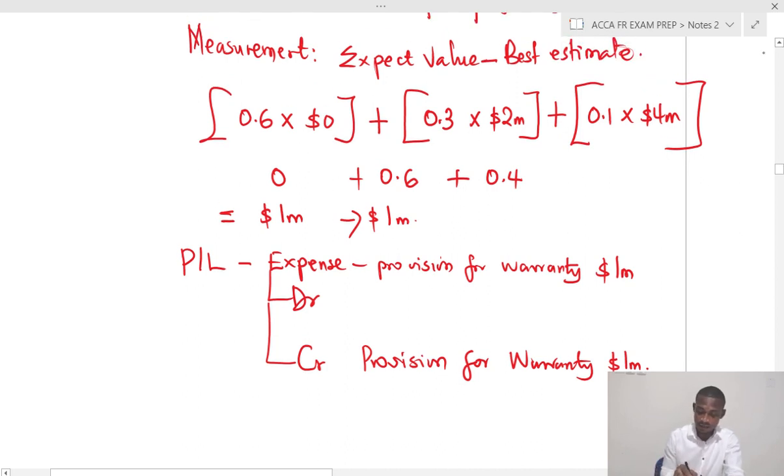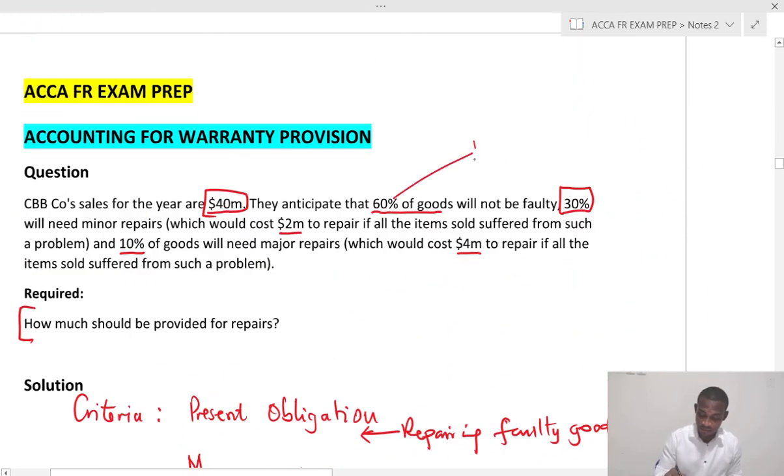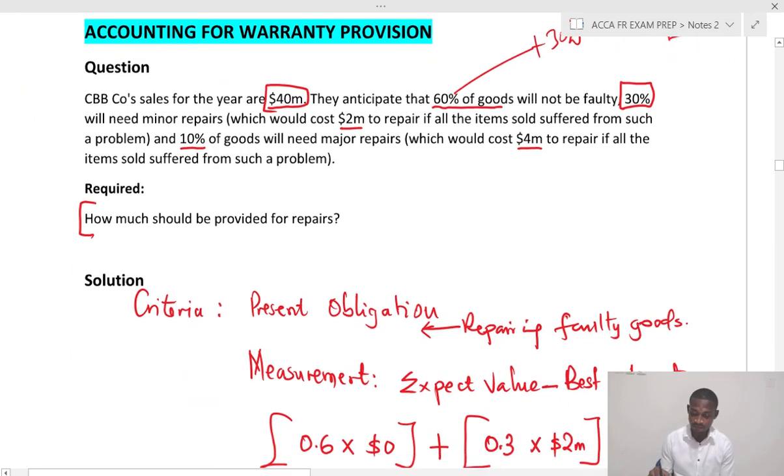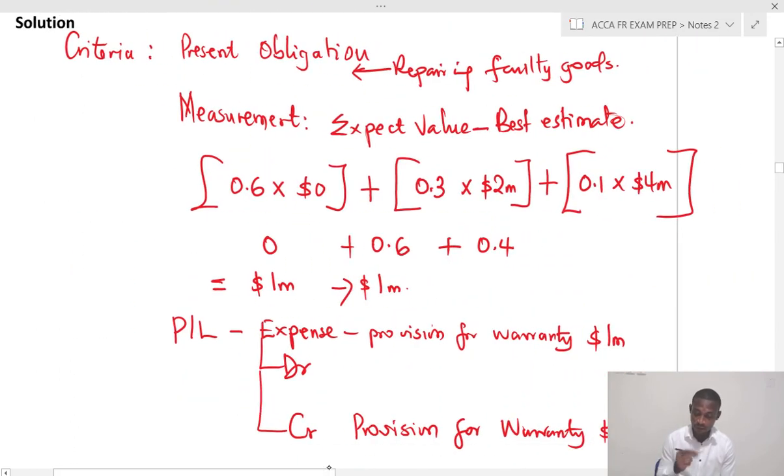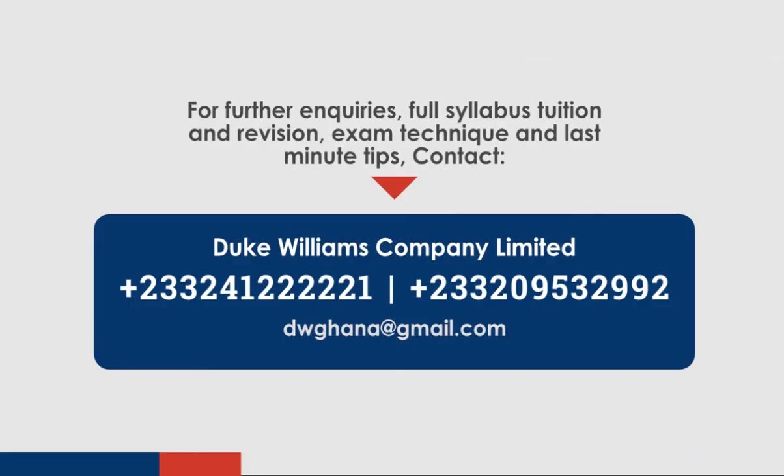Now, the reason I've done this is that the total population or probability should give you 100%. Because if you have 60 plus 30 plus 10, it should be equal to 100%. That's how we find the probabilities. So I hope this helps you in your prep for the exam as to how to account for warranty. Please subscribe to this channel to receive updates on new videos. I will see you soon. Bye, thank you.